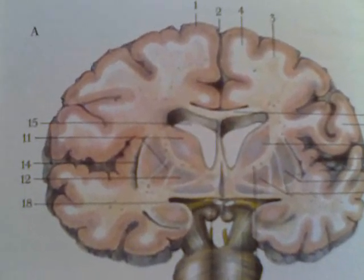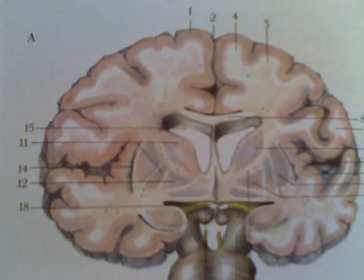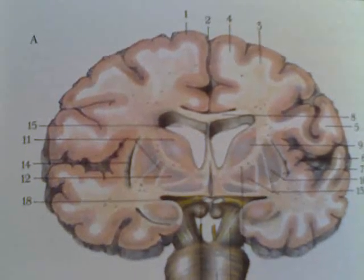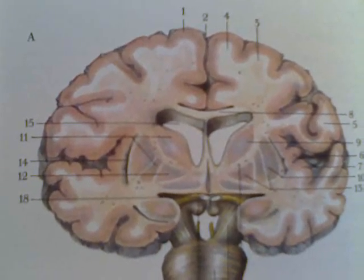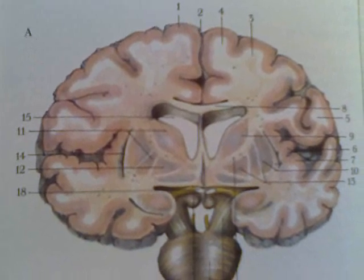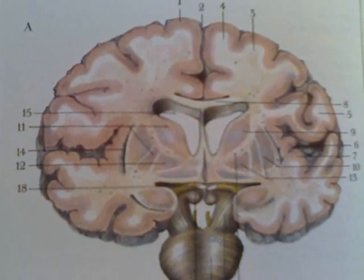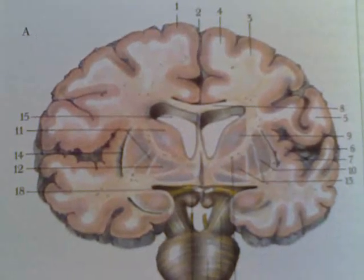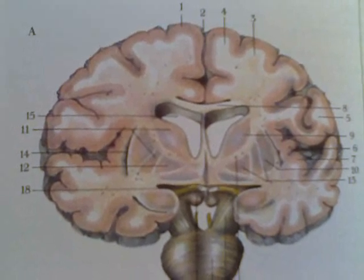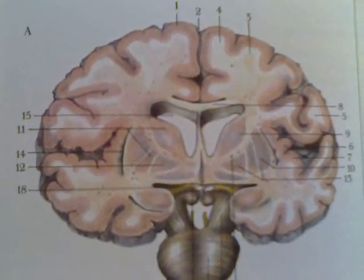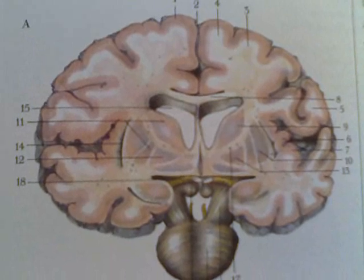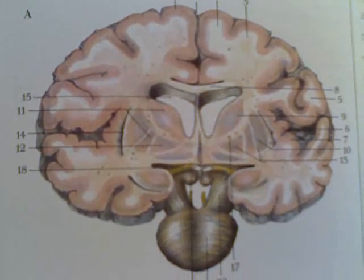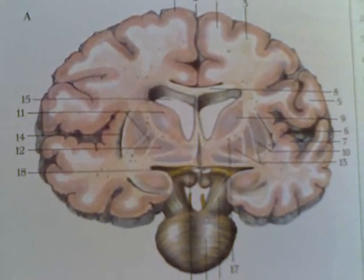Number four is the frontal gyrus. Going back a little bit, number eight is the corpus callosum. Number 15 is the lateral ventricle of the brain. Number 18 is the optic nerve.